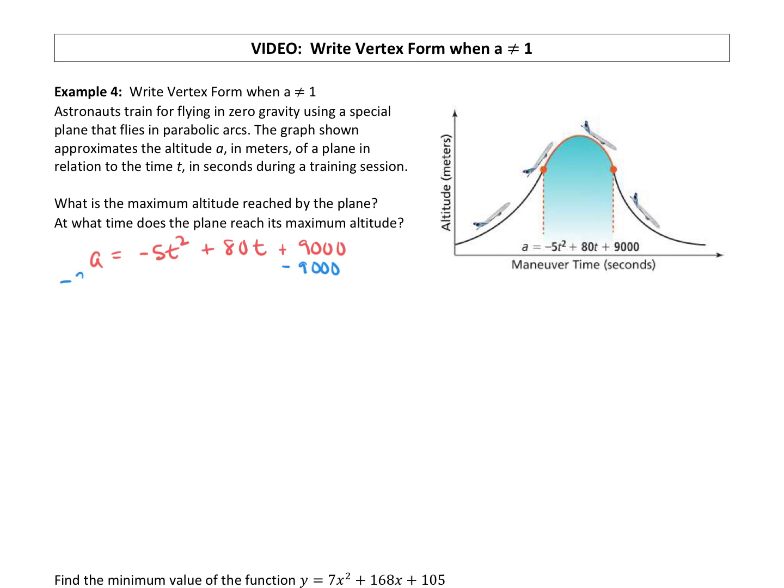Instead of a equals, or that a equals, it's just like a y equals. So we have a minus 9000 equals negative 5t squared plus 80t. We want to complete the square over here. Well, we don't want this negative 5 in front of the t squared. We can't divide it out to get rid of it, but we can factor it out.